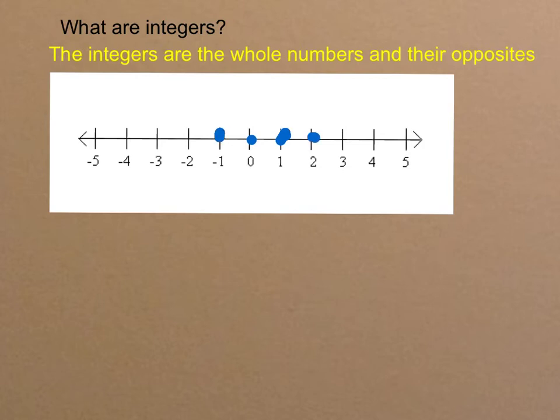2 is a whole number, it's an integer. Its opposite, negative 2, is also an integer. This can be extended forever.